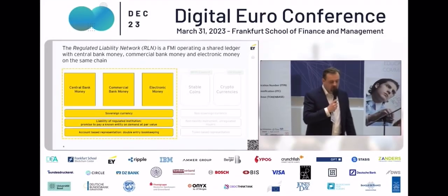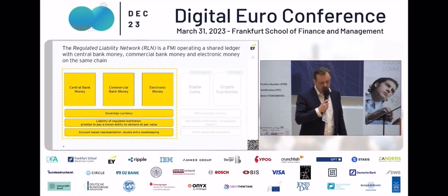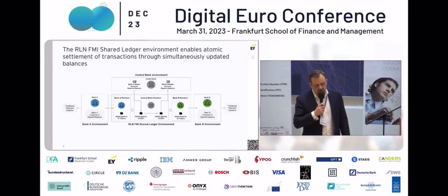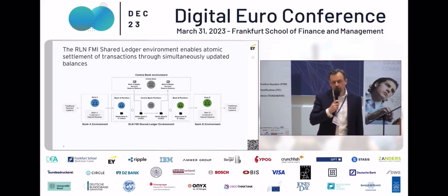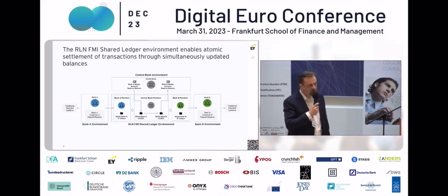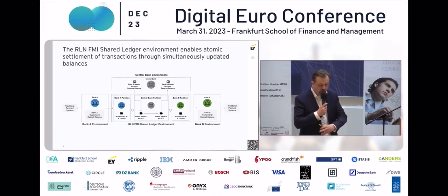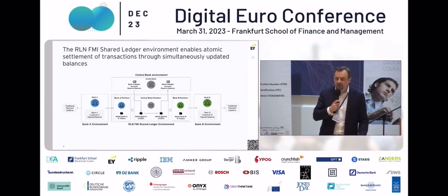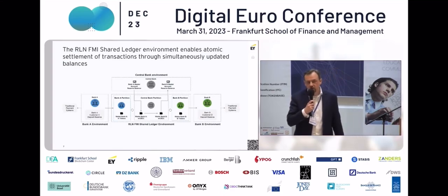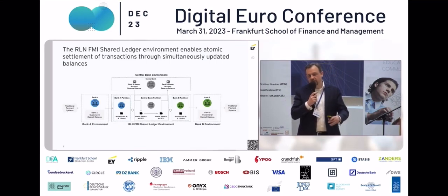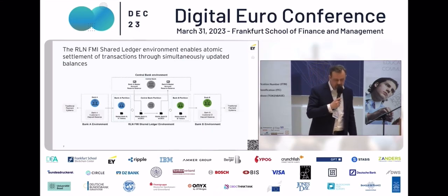This is the whole concept. If we look at a schematic view of how an infrastructure could look like, you would have in a shared ledger a partition of the central bank and the accounts from the commercial banks. If a corporate from Bank A wants to transfer money to a corporate connected to Bank B, you would have atomic settlement of the transaction through simultaneous update of balances — not just on the bank side, but also in the central bank partition. This would allow it to become a settlement layer for settling central bank money and commercial bank money in the same environment.